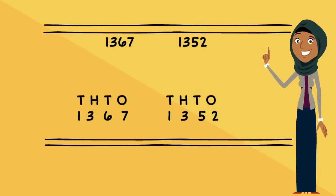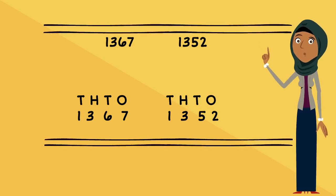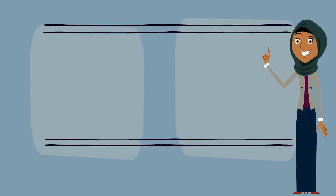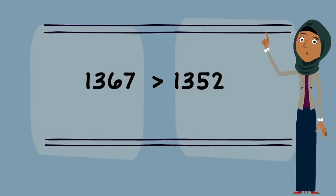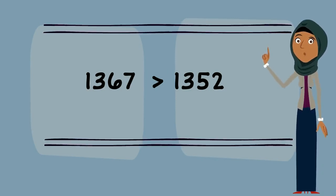They both have 1,000s, so we need to move to the 100s. They both have 300s that are the same, so we move to the 10s. One has 6 tenths and one has 5 tenths — that number is bigger. So we can say 1,367 is bigger than 1,352, or we can say 1,352 is smaller than 1,367.